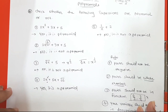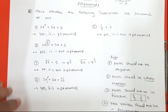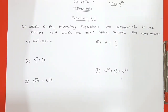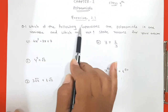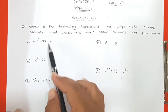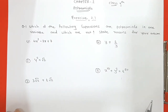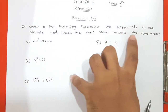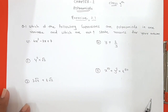Now we go to exercise 2.1. Question number 1: which of the following expressions are polynomials in one variable, and which are not? State reasons. The first expression is 4x squared minus 3x plus 7. Here the only variable is x — not two, even though the power differs. There is one variable: x. The powers are whole numbers, none negative or fractional. So it is a polynomial in one variable.